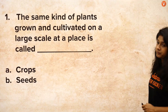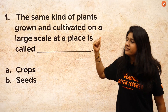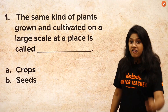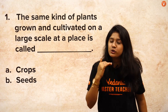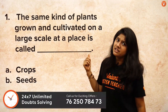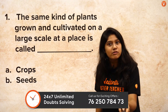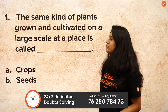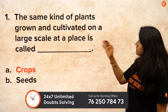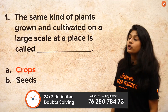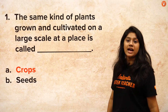When plants of the same kind are cultivated at one place on a large scale, they are called crops — a very important definition that can come in a one-mark question. Examples of crops include wheat, rice, maize, groundnut, peas, and many more. So now we are clear about what crops are.